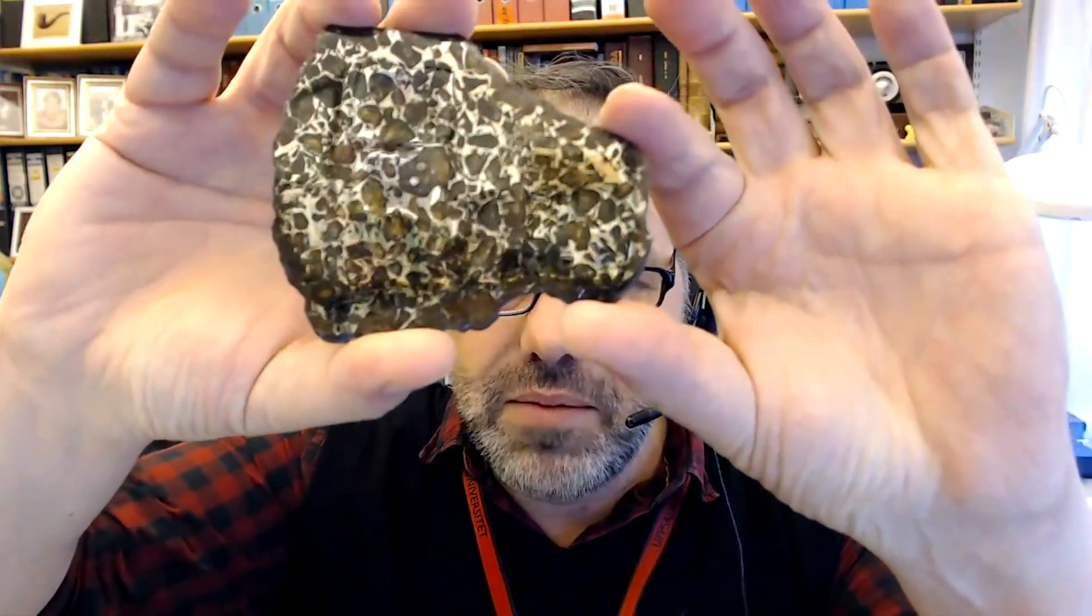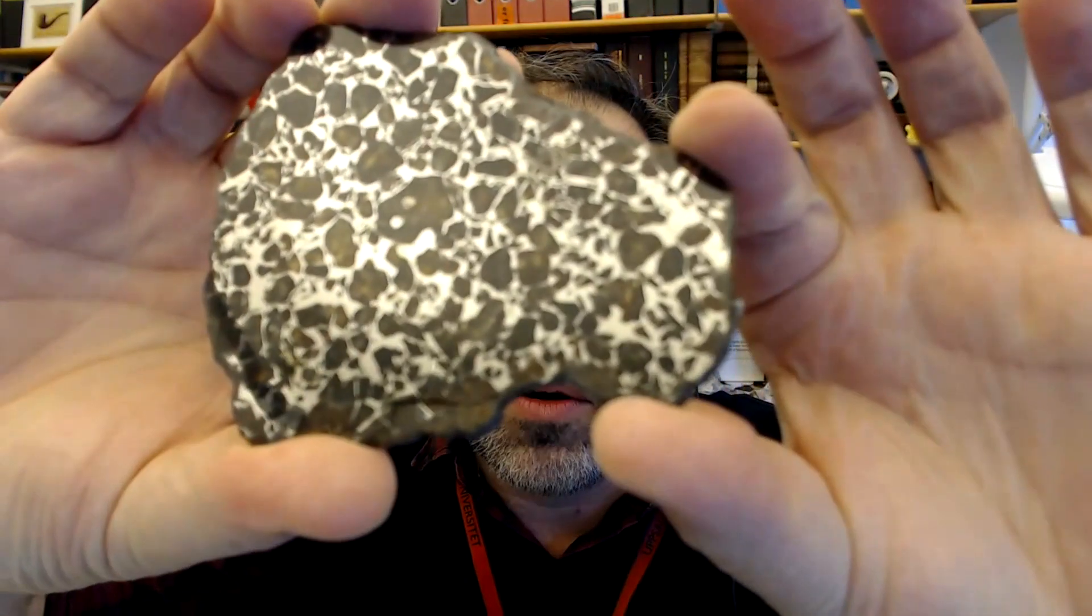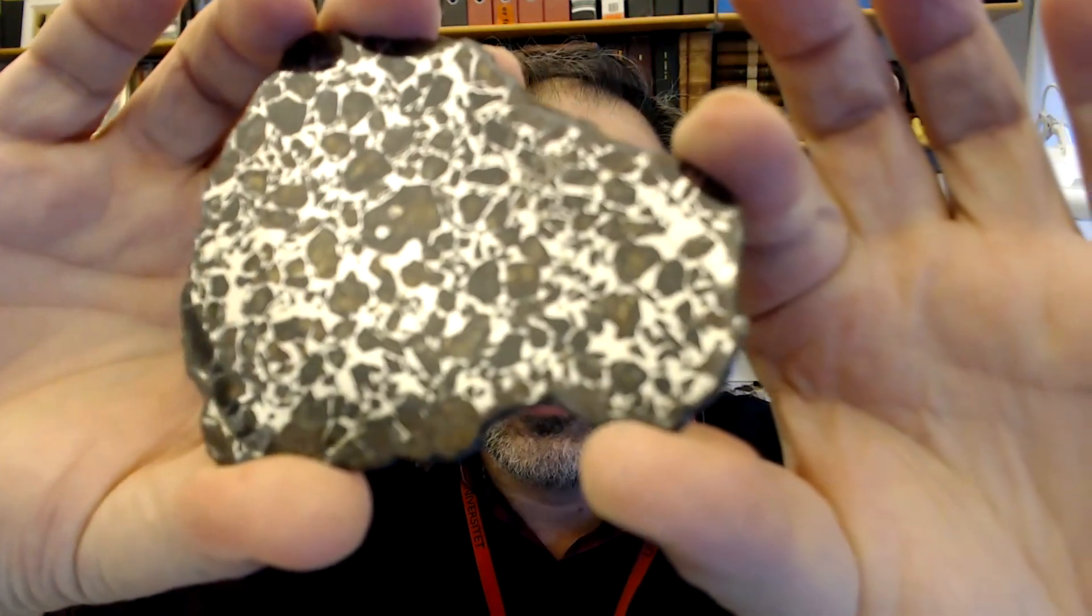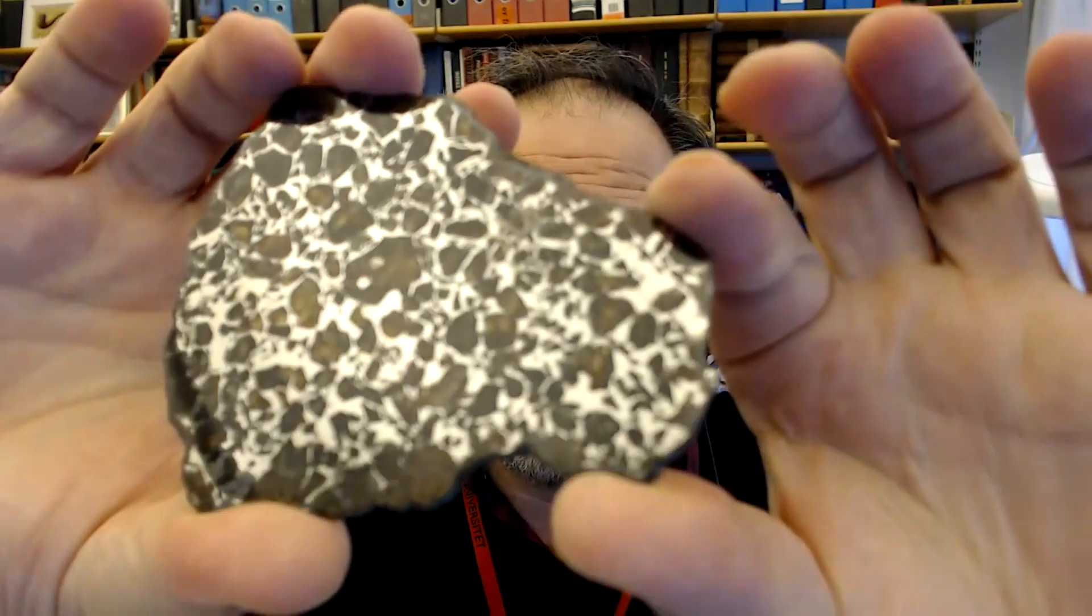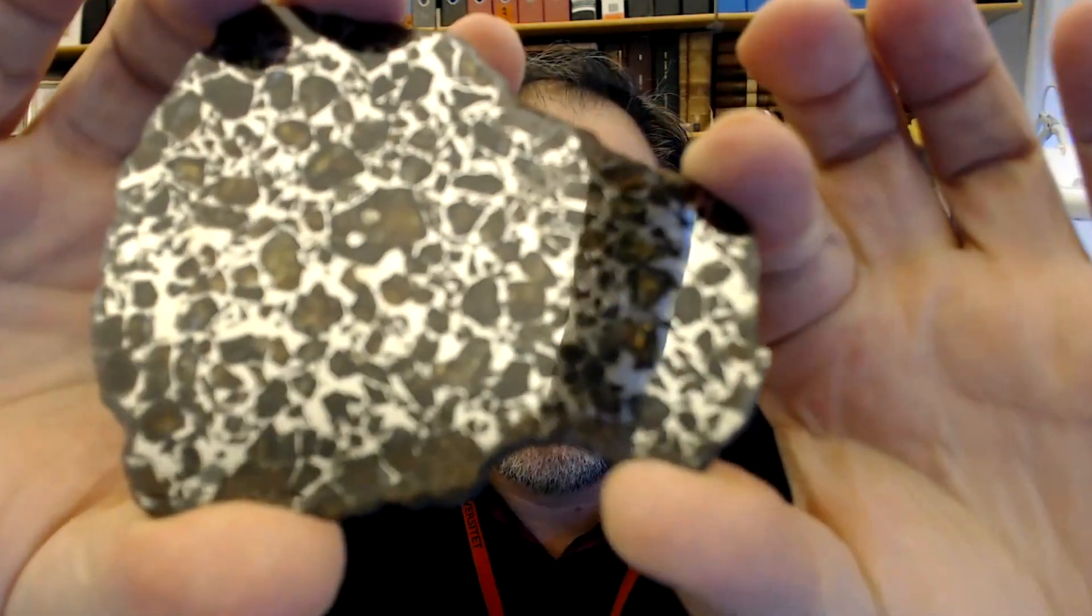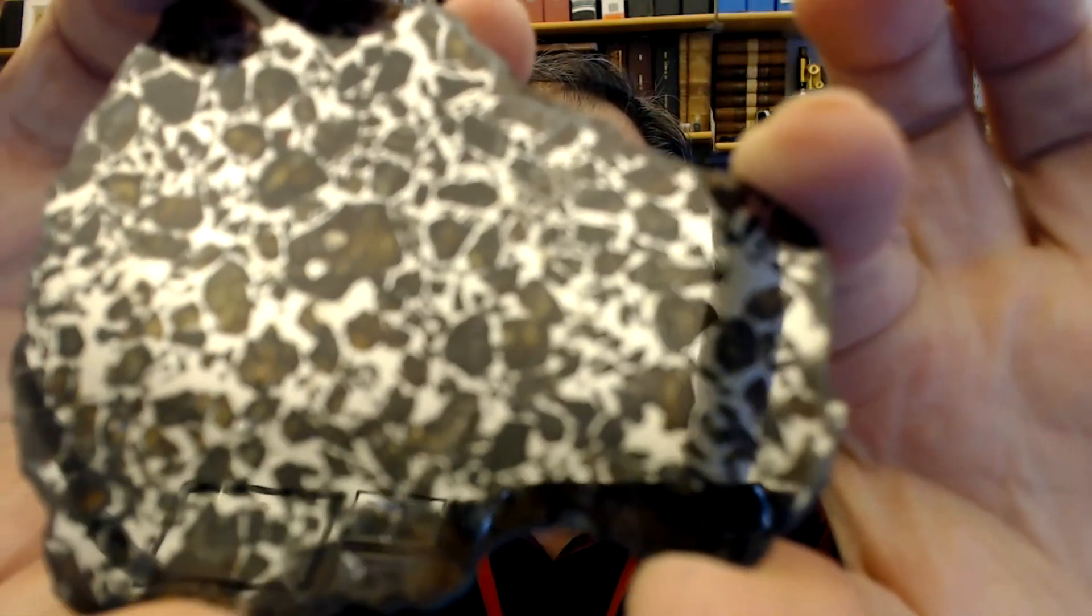Here is the pallasite of this particular meteorite. It's a little hard to get this right because it's polished, so it'll look very shiny and reflect a lot. Let's see whether I get a good picture here.